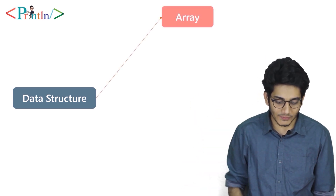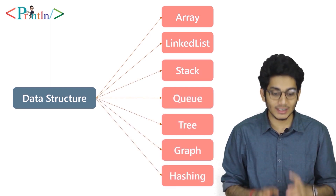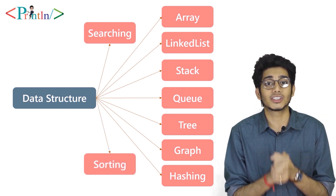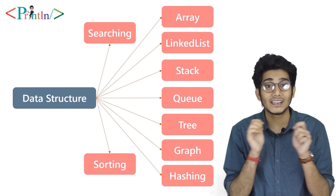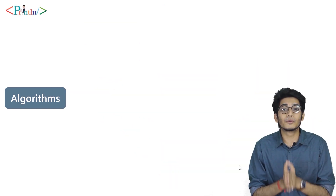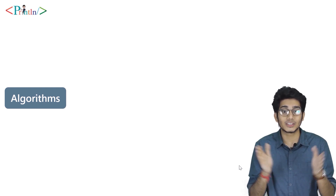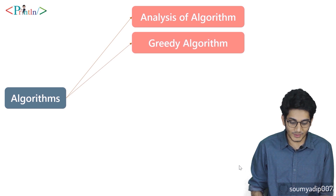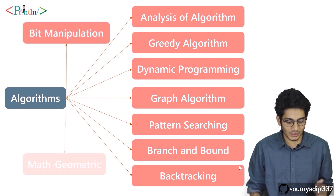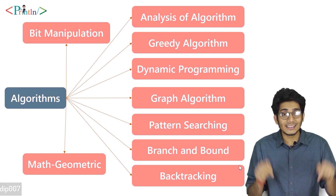In this DSA series we'll cover: array, linked list, stack, queue, tree, graph, hashing, searching, and sorting. After completing DSA, we'll move to DAA, which covers analysis of algorithm, greedy algorithm, dynamic programming, graph, pattern searching, branch and bound, backtracking, bit manipulation, and mathematics and geometrics.